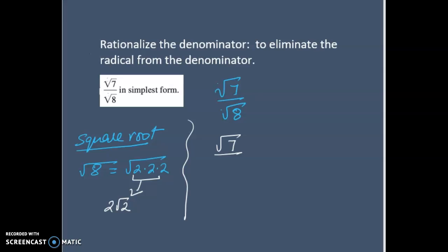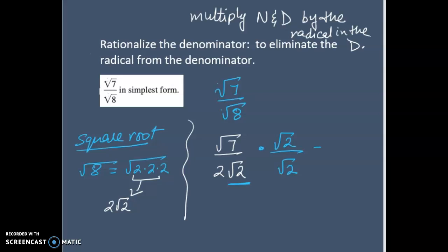Let's rewrite it. I can write this equation as radical 7 over 2 radical 2. Now the question is how to rationalize it. I still have a radical 2 in the denominator. To rationalize it, what we do? We multiply numerator and denominator by the radical in the denominator. What is the radical in the denominator right here? Radical 2. So let's multiply numerator and denominator with radical 2.